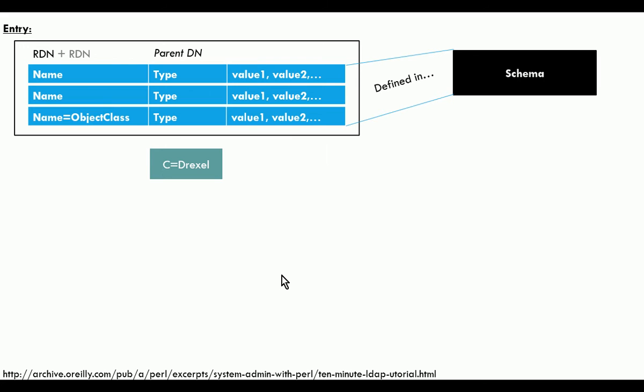On our networks, what's most commonly unique about a person is their user ID — their username. RDN entries not only have a unique identifier for the entry itself, but also have a parent. That's another really important concept in LDAP. In a relational database, you have tables related to other tables. But in LDAP, we don't have tables — we have objects related to other objects. Objects always have a parent. The schema of name-value pairs you find in an entry is always defined in what's called an object class.